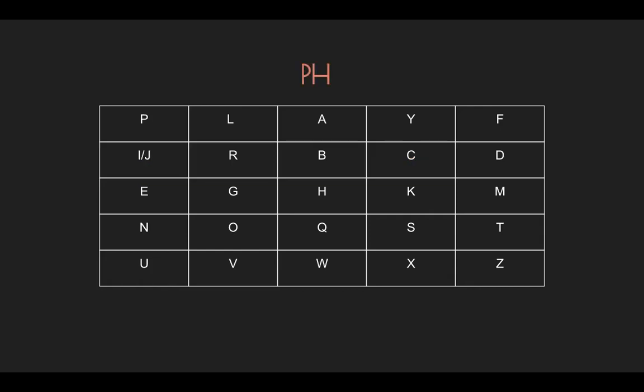Next comes P and H which are neither in the same row nor in the same column so you create a box and then you swap to the ends of the box that are in the same row. So that will be A and E.